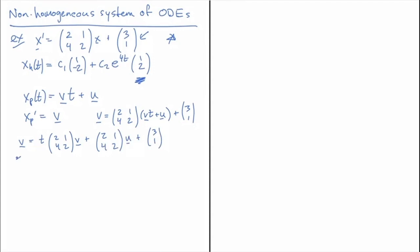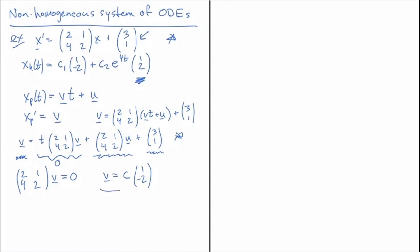Because we have a constant vector on the left and constant vectors plus a t-multiplied vector on the right, we can break this equation into two pieces and force each to be equal separately. The t-times-vector term has nothing to balance it, so it must be zero: (2,4; 1,2)·v = 0. The solution to this is v = c·(1, -2) for some constant c.